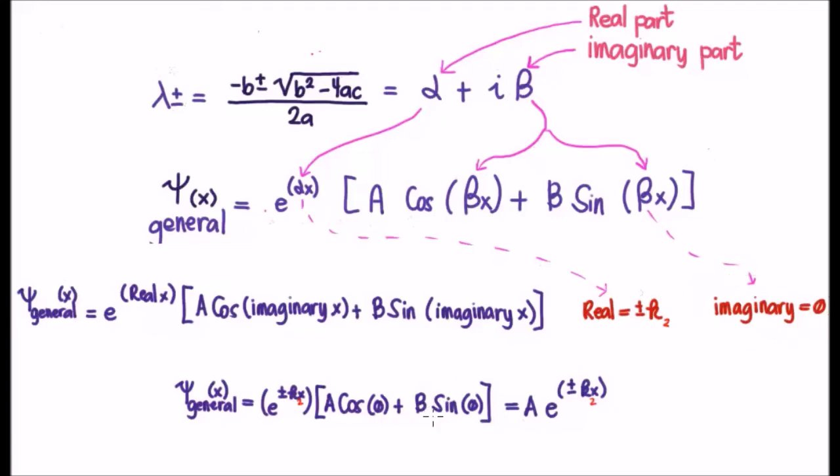Well, the sine of naught, or sine of zero, is zero. So, that'll disappear. The cosine of zero is one. So, that means we're just going to have A times e^(±k₂x) as the general solution to our differential equation.